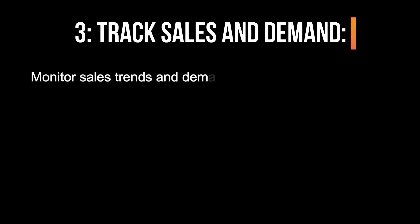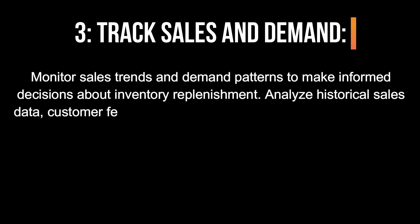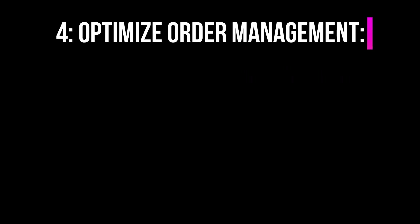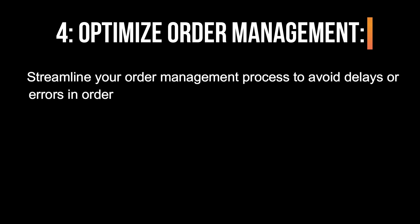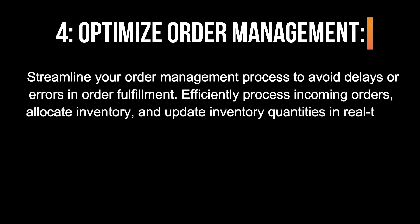3. Track sales and demand. Monitor sales trends and demand patterns to make informed decisions about inventory replenishment. Analyze historical sales data, customer feedback, and market trends to anticipate changes in demand and adjust your inventory levels accordingly. 4. Optimize order management. Streamline your order management process to avoid delays or errors in order fulfillment. Efficiently process incoming orders, allocate inventory, and update inventory quantities in real-time to ensure accurate inventory levels.